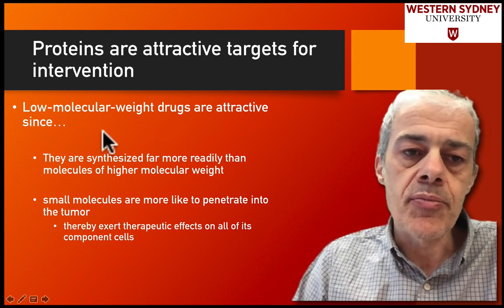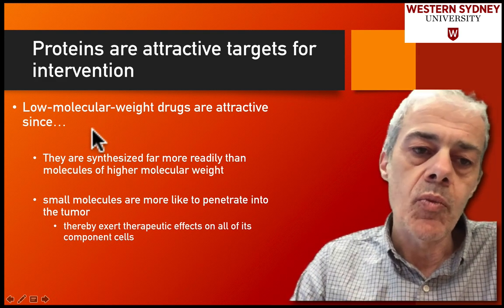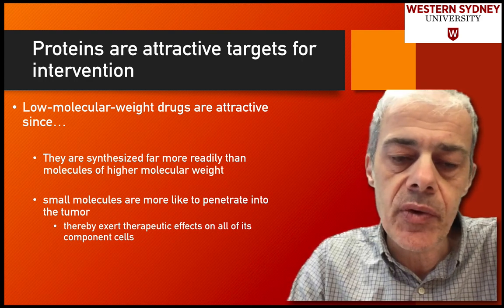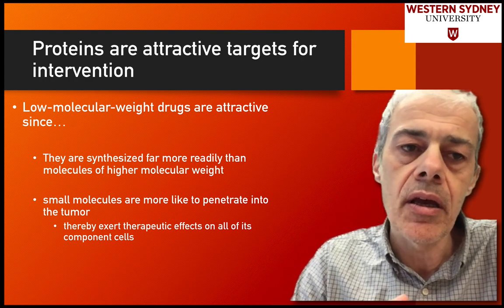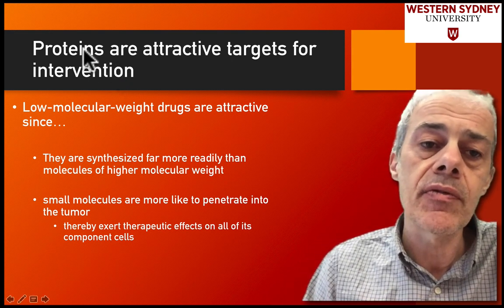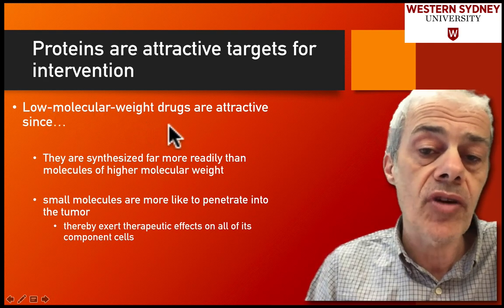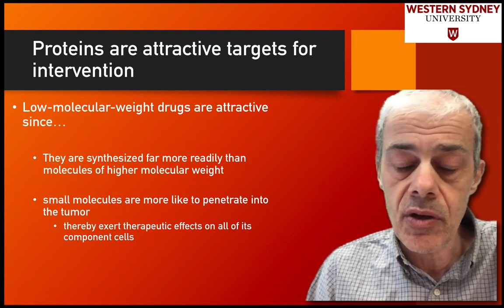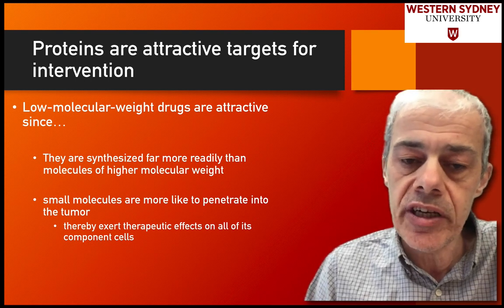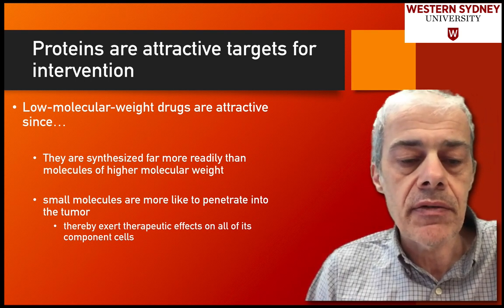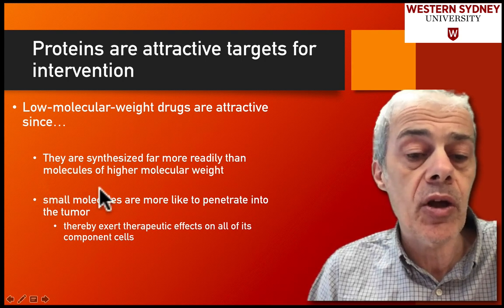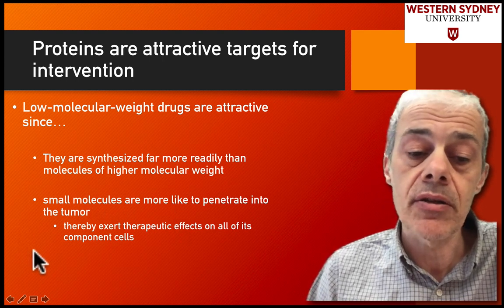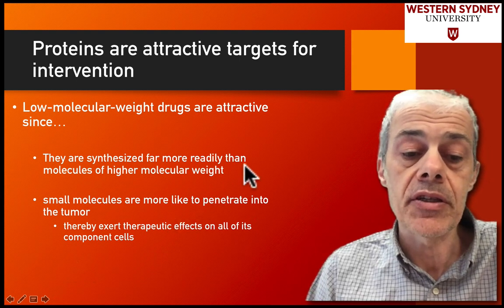Proteins are the targets for these drug designs. Low molecular weight drugs are attractive for several reasons: they can be designed fairly straightforwardly, they can get into cells, they're soluble, and they're more straightforward to synthesize than high molecular weight molecules. Importantly, small molecular weight molecules are more likely to penetrate the tumor than larger molecules, and therefore you're going to see an effect for those molecules.